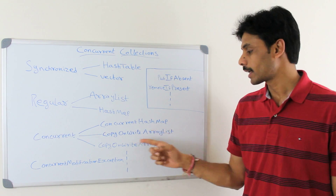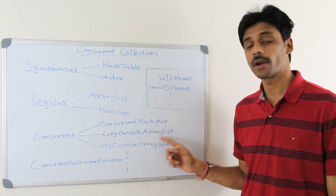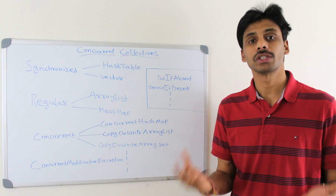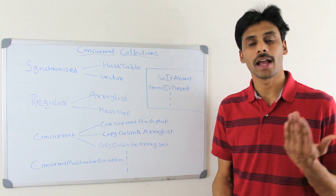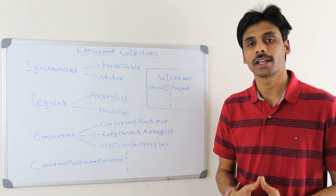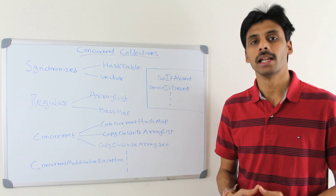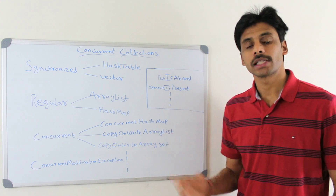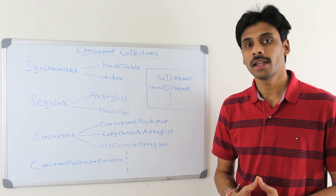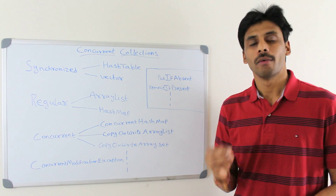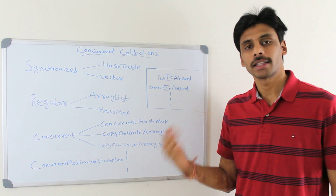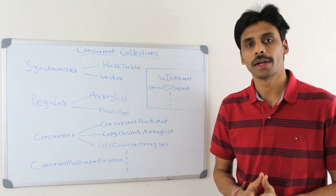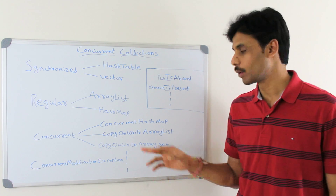That's where the concurrent collections introduced in Java 5 come to the rescue. Collections like ConcurrentHashMap, CopyOnWriteArrayList, and CopyOnWriteArraySet allow us to concurrently iterate and modify collections across multiple threads. ConcurrentHashMap uses something called lock stripping to ensure that while one thread is iterating, if another thread modifies the collection, the JVM will sync them up at some point.